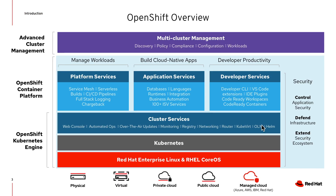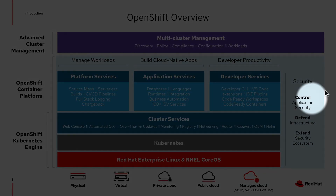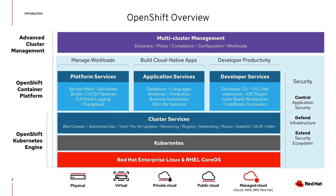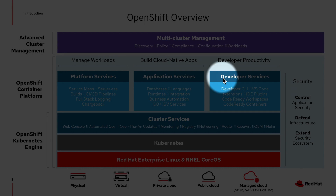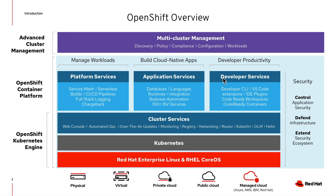Red Hat OpenShift is the leading enterprise Kubernetes platform that automates deployment, management, and scaling of containerized applications. It has hardened security and provides many additional out-of-the-box capabilities over plain vanilla do-it-yourself Kubernetes.